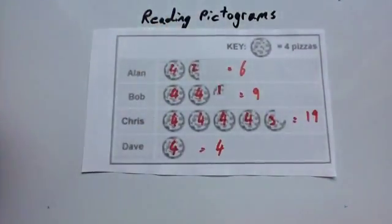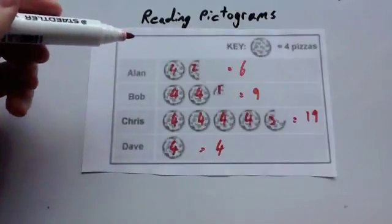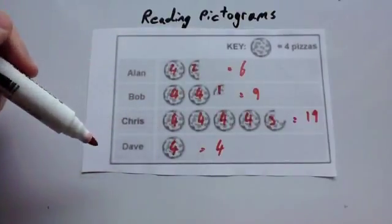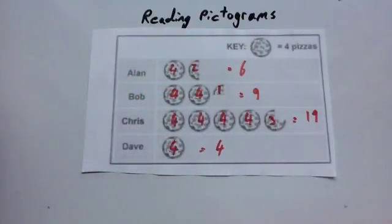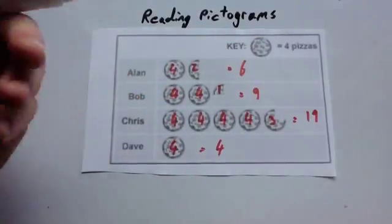Typical type of questions that you will have is they'll give you a pictogram and ask you to complete it. So they'll leave one of the sections blank, perhaps Dave's, and say Dave ate eight pizzas, complete Dave's section.